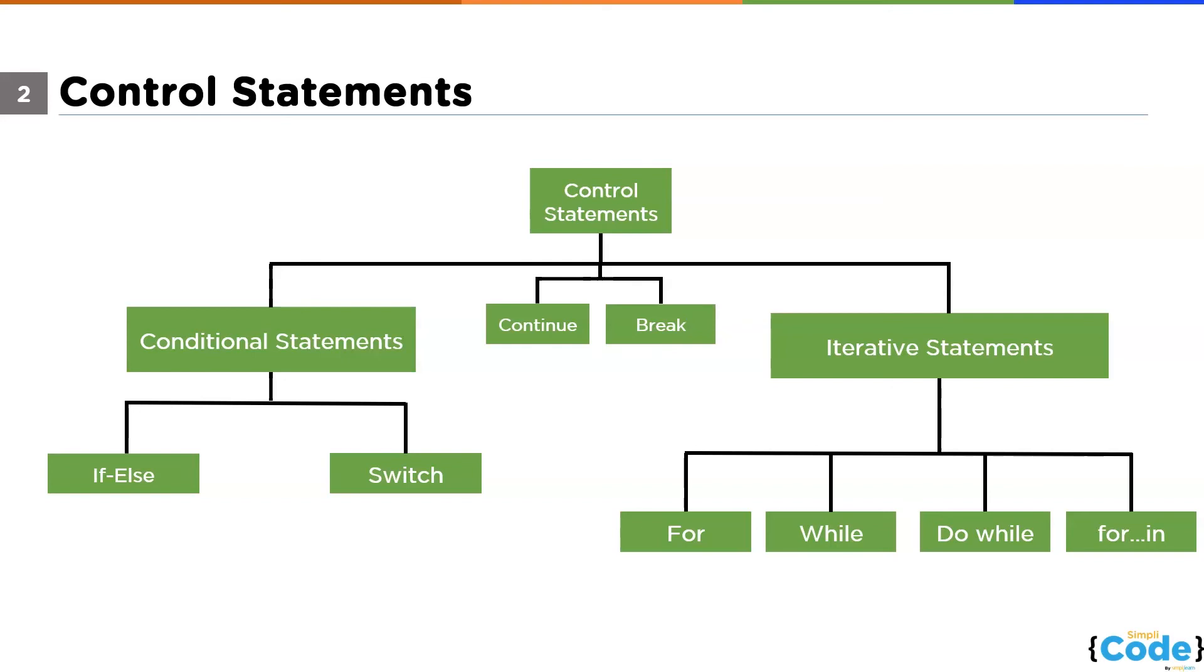And on the other hand, the continue statement breaks a single iteration. When used in a loop, it breaks a single iteration. And it breaks the iteration only if the specified condition occurs. And then it will continue with the next iteration in the loop.